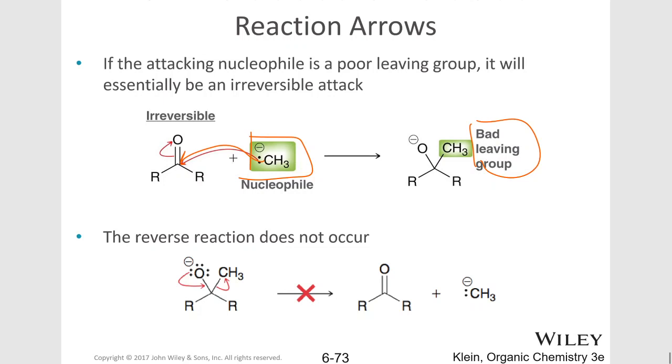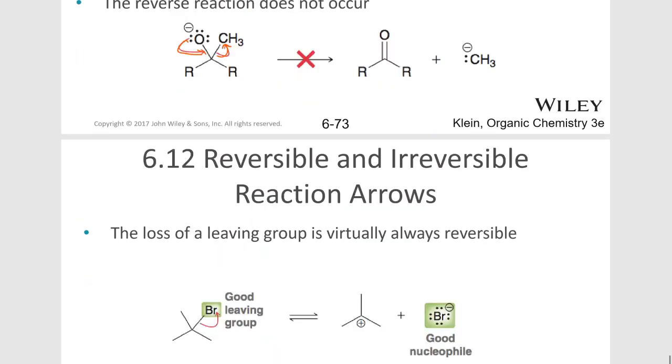We're going to look at these mechanistic steps as we move through the course, and I wouldn't really expect my students to be able to predict this too much right now, but just to know that these things do happen. You can't really push out a carbanion from this alkoxide here. It's essentially irreversible.